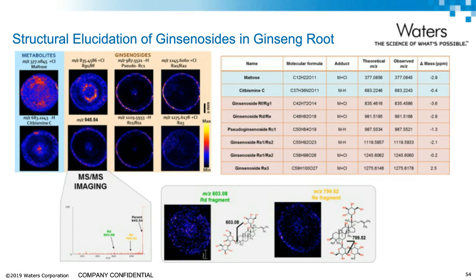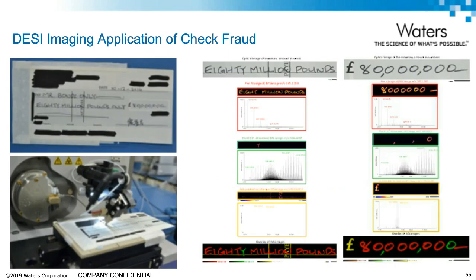Another example of DESI is to detect fraud. In this case, we're detecting a check fraud. Since DESI is a relatively non-destructive technique and you do not need to cut pieces to fit inside the mass spec like a MALDI target, and you don't need any matrix deposition, we can just tape it on the stage and do the analysis. Here the fraud detected — a mock fraud — was the addition of a zero after a check amount to make it of a greater value than it originally was.